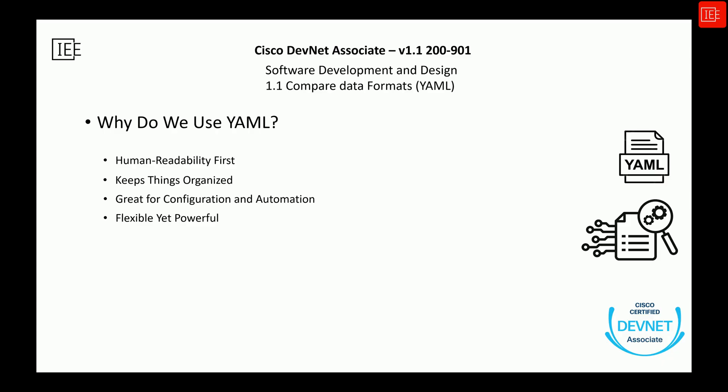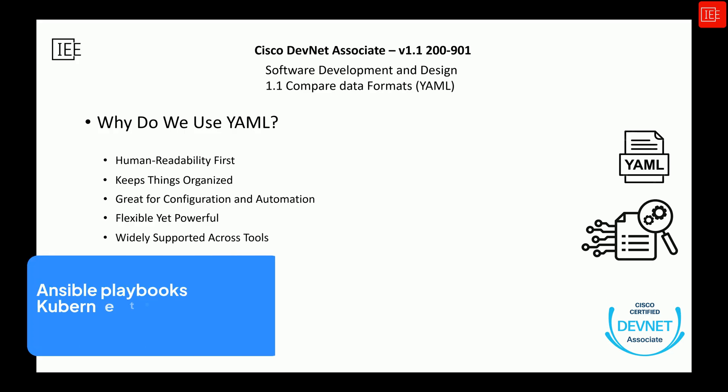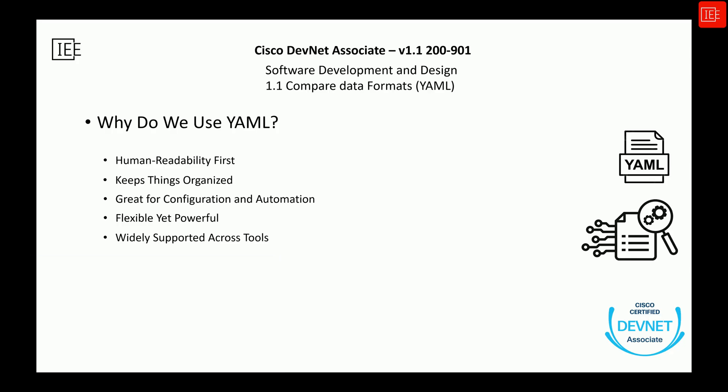Even though YAML is simple, it's very flexible. You can define simple values like names or IP addresses, define complex nested structures like entire network topologies, or even reference other YAML files to keep your work clean and modular. This flexibility makes YAML perfect for both small automation projects and large enterprise-grade systems. If you look around today, YAML is everywhere — Ansible playbooks, Kubernetes deployment files, and GitHub Actions workflows all use YAML. Once you know YAML, you are opening doors to work across many fields.